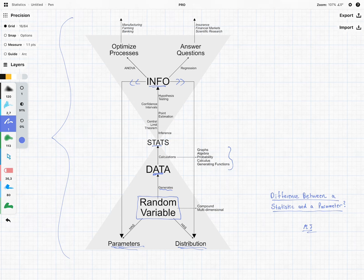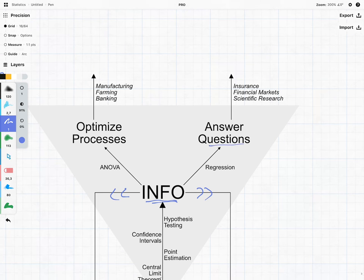And once we know the information about the random variable, in this case its distribution and parameters, we can use this information to answer questions and optimize processes in a whole wide variety of fields. So it's a very good thing to do.